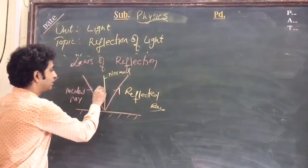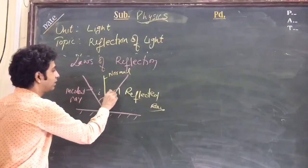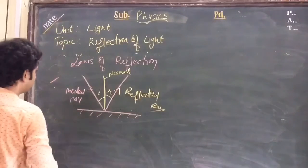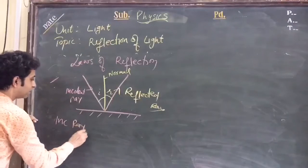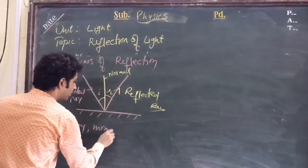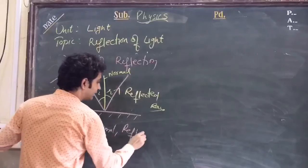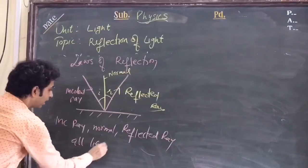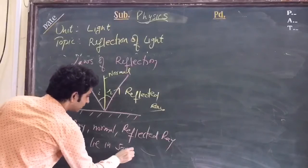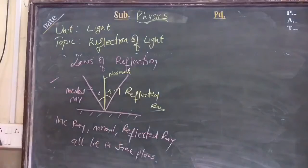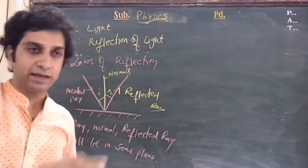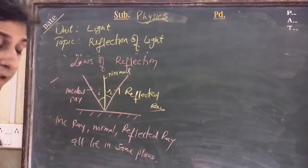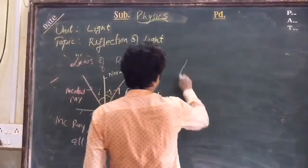This angle is called angle of incidence, this angle is called angle of reflection. First law: incident ray, normal, and reflected ray all lie in the same plane. This is a very basic law.